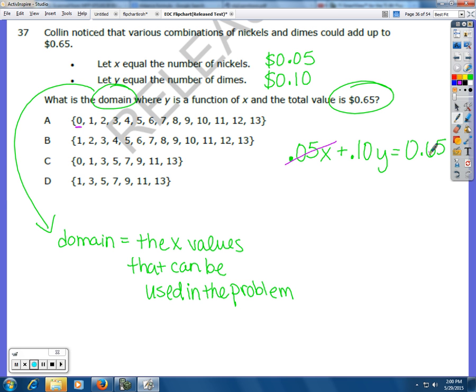If you had 6 dimes, you'd have 60 cents. If you had 7 dimes, you'd have 70 cents. There's no way to get to 65. So 0 is not an option for X. So we can mark off A, and we can mark off C.